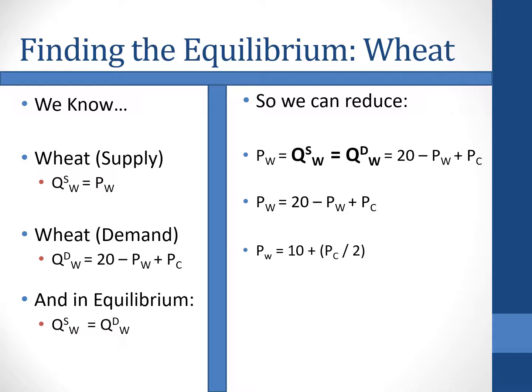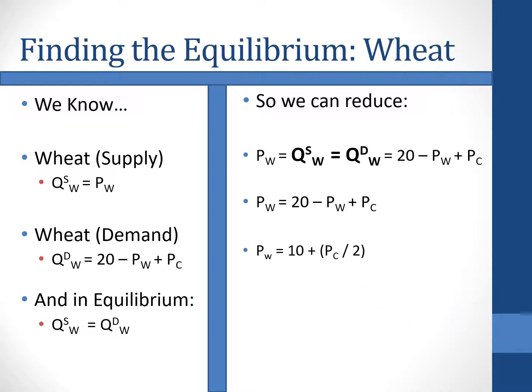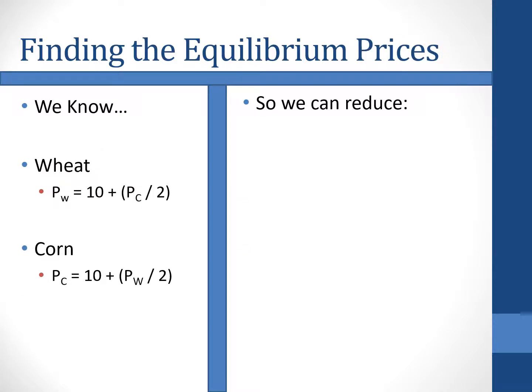Since the corn setup mirrors wheat with prices switched, we similarly find that the price of corn equals 10 plus PW divided by 2. At this point we have a system of equations — a collection of two or more equations with the same set of unknowns. We try to find values for each unknown that satisfy every equation in the system. So: price of wheat equals 10 plus PC divided by 2, and price of corn equals 10 plus PW divided by 2.